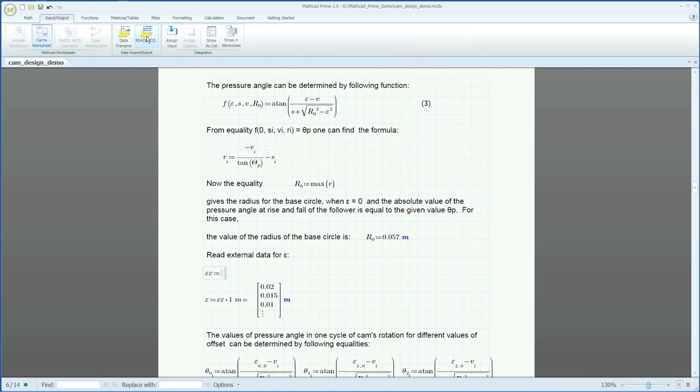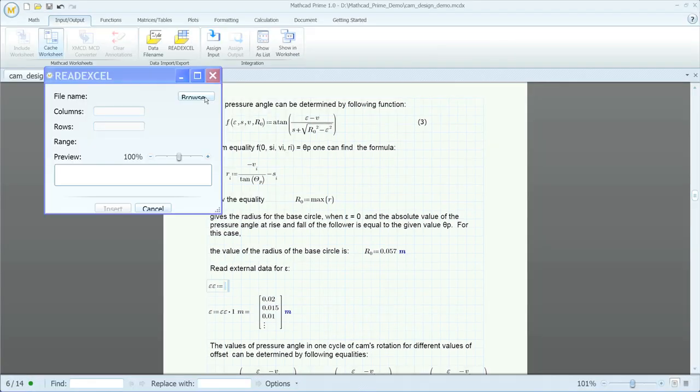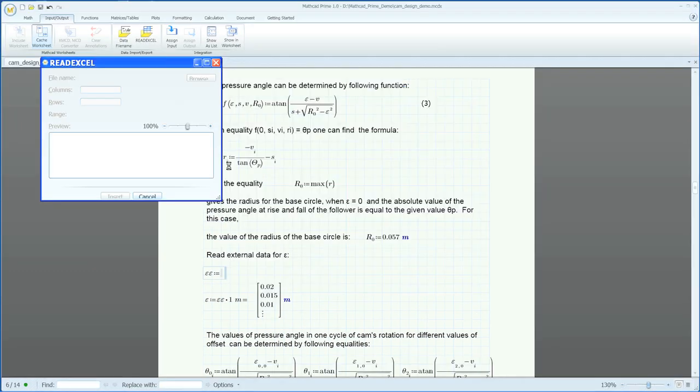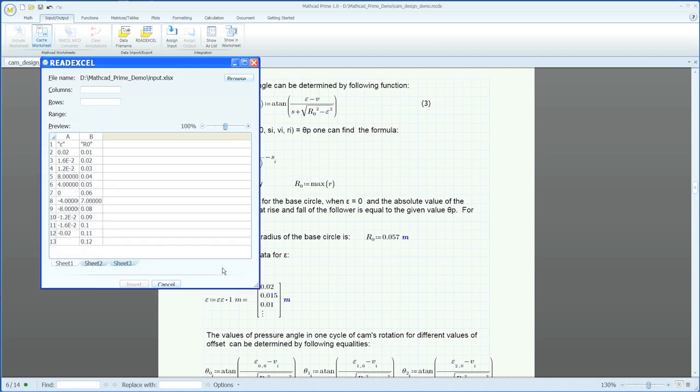MathCAD Prime also has the ability to read and write data files, one of the most common of which is Microsoft Excel. A file reference can of course be typed directly as a function argument or, as shown here, a file reference to an updated Excel workbook can quickly be made using a dialog to graphically select the workbook, the sheet, and then the desired data range.